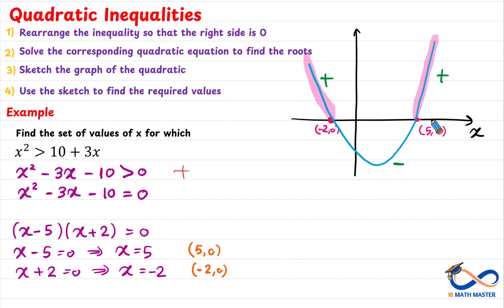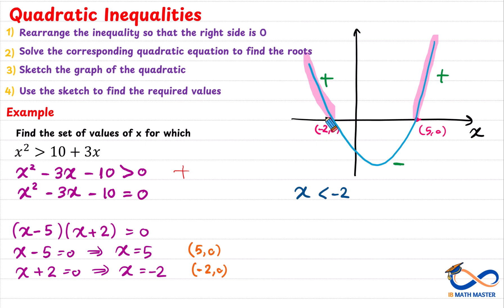As we see, for values of x on the right of 5 — from 5 onward to infinity — the quadratic inequality will be positive. And also to the left of negative 2, toward negative infinity, the quadratic will also be positive. That's why the solution will be x less than negative 2, or x greater than 5, meaning every value less than negative 2 or greater than 5 makes the quadratic positive.